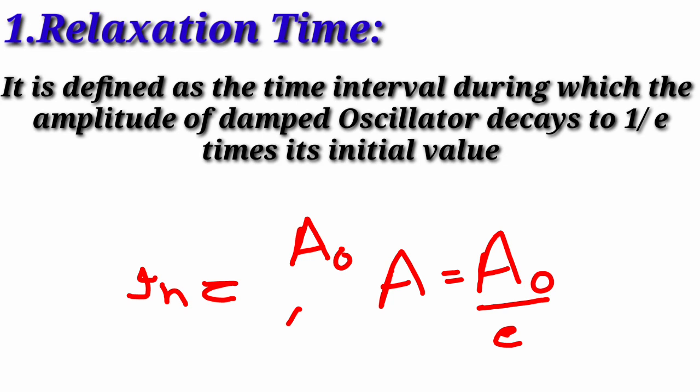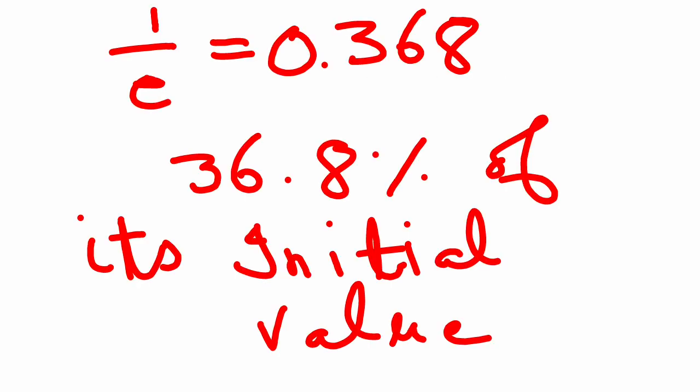So if the initial value is A₀, then after the relaxation time the amplitude decays to A₀/e. The value of e is equal to 2.718, so 1/e is equal to 0.368. Therefore, relaxation time is the time when the amplitude decays to 36.8% of its initial value.